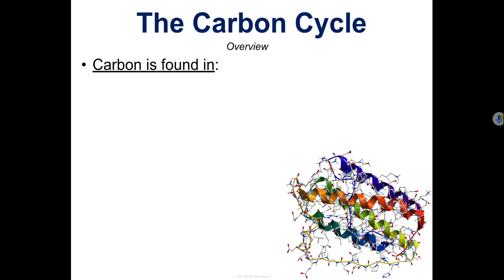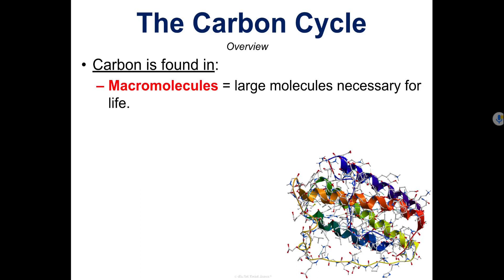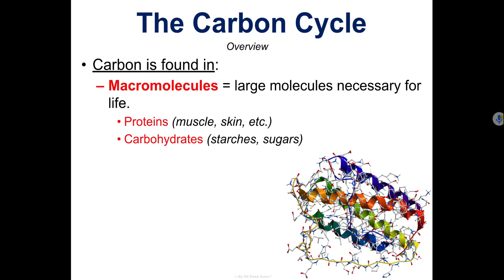So where can carbon be found? Well, it can be found in a few places. The first is macromolecules. These are very large molecules that are necessary for life, and there are four types of macromolecules: proteins, carbohydrates, lipids, and nucleic acids.